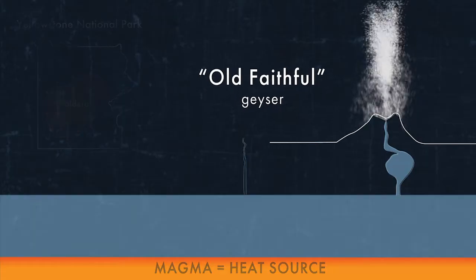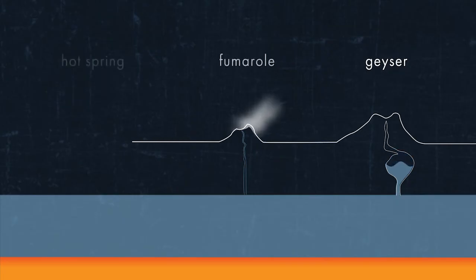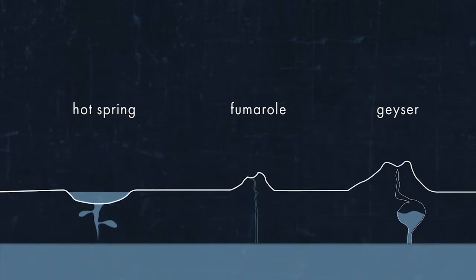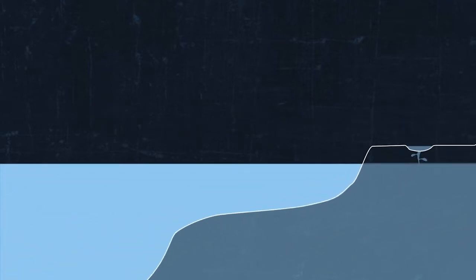These features include geysers, fumaroles, and hot springs. Some of the most interesting thermal features, however, are out of sight of our view, beneath Yellowstone Lake.